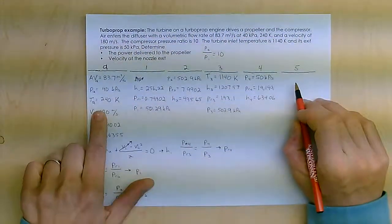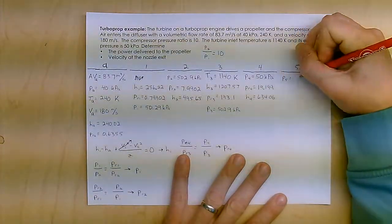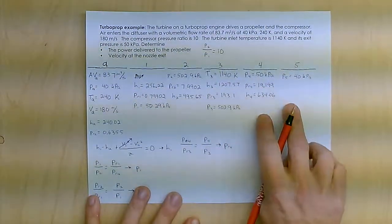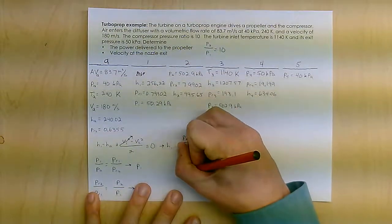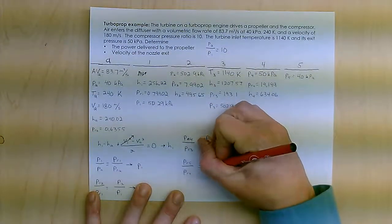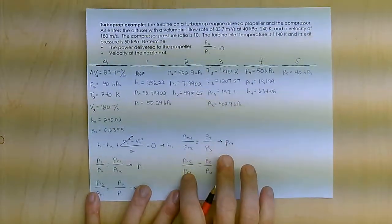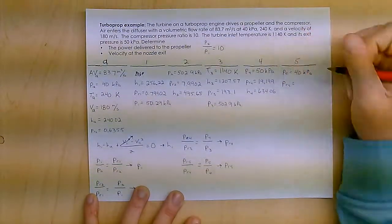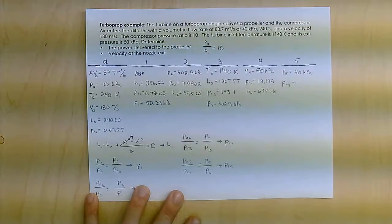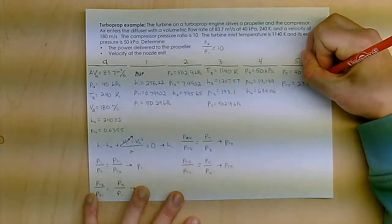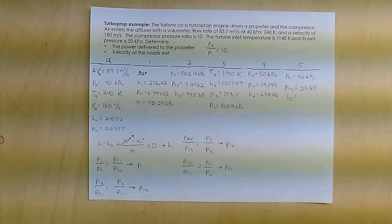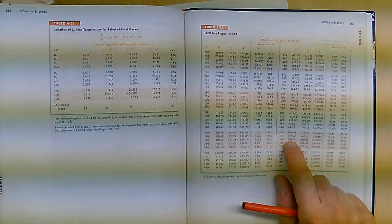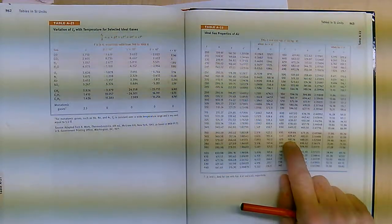Now the other thing that I know is this thing gets pumped out at the same pressure that it gets pumped in, so P5 is 40 kilopascals. The other thing I know is that for the nozzle, it is also isentropic, so I can say PR5 over PR4 equals P5 over P4. I know my pressure ratio, from that I can find PR5, PR5 equals 23.84. From that, I can look up H5, which is going to be 676.17.